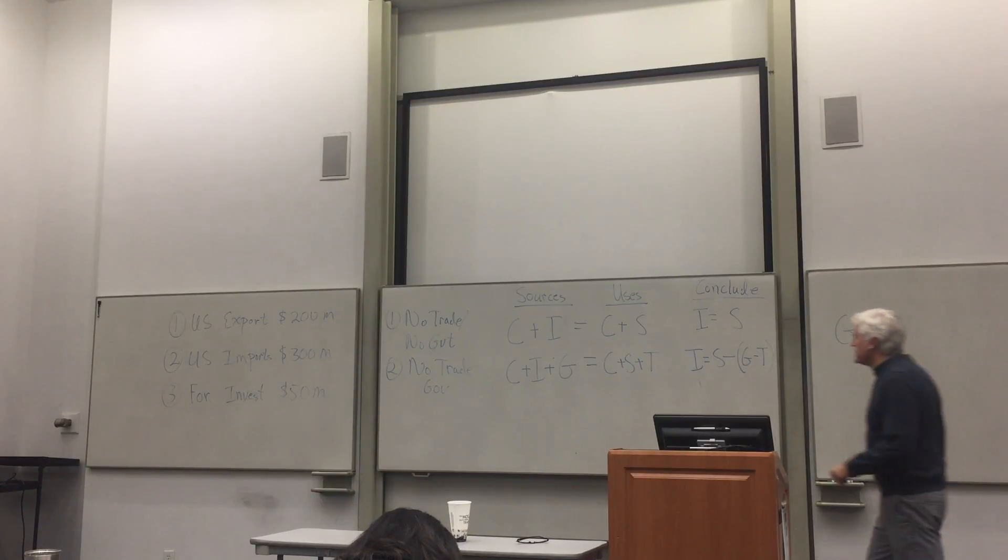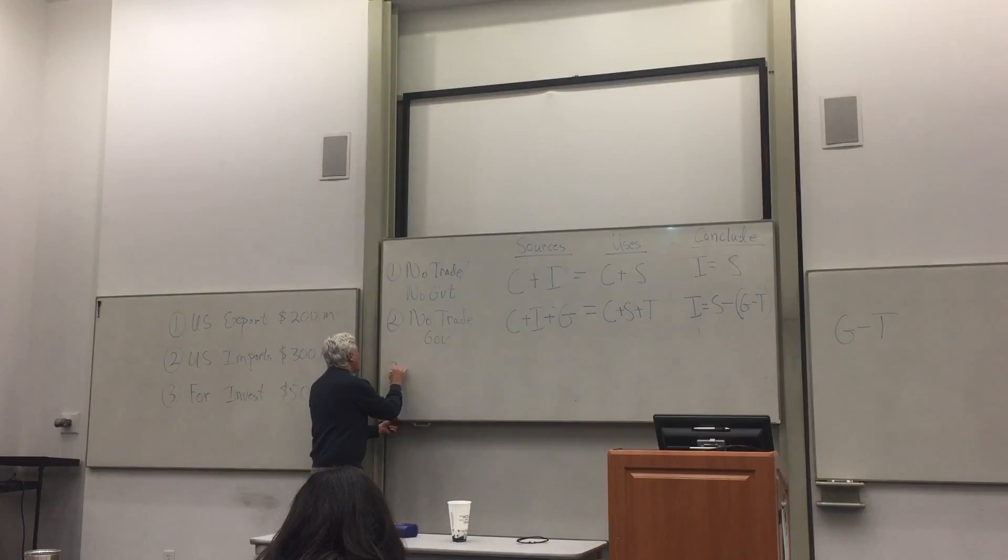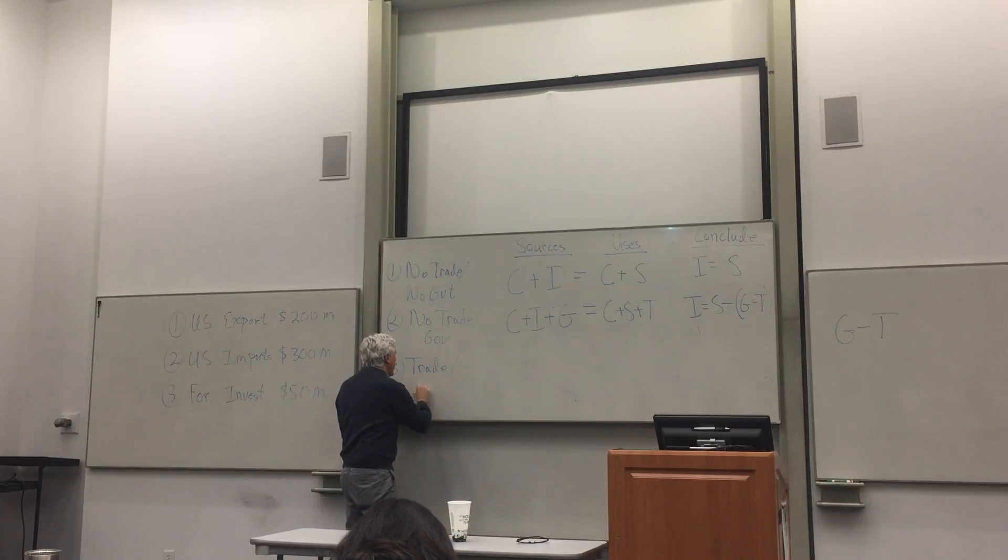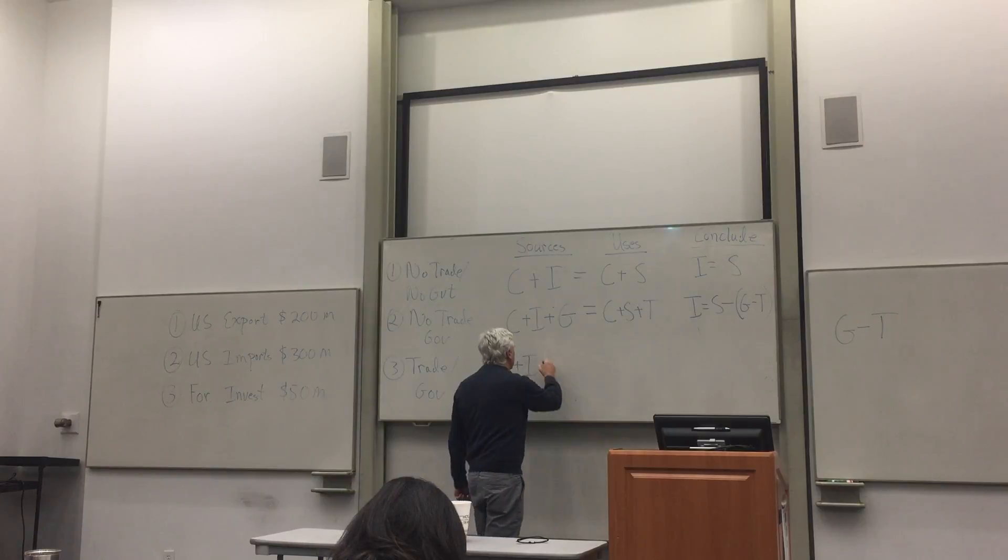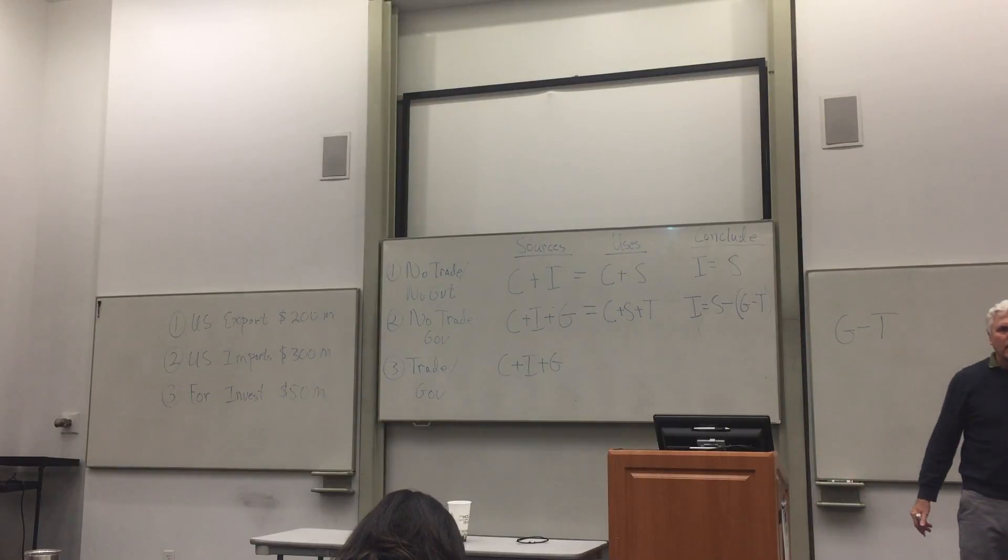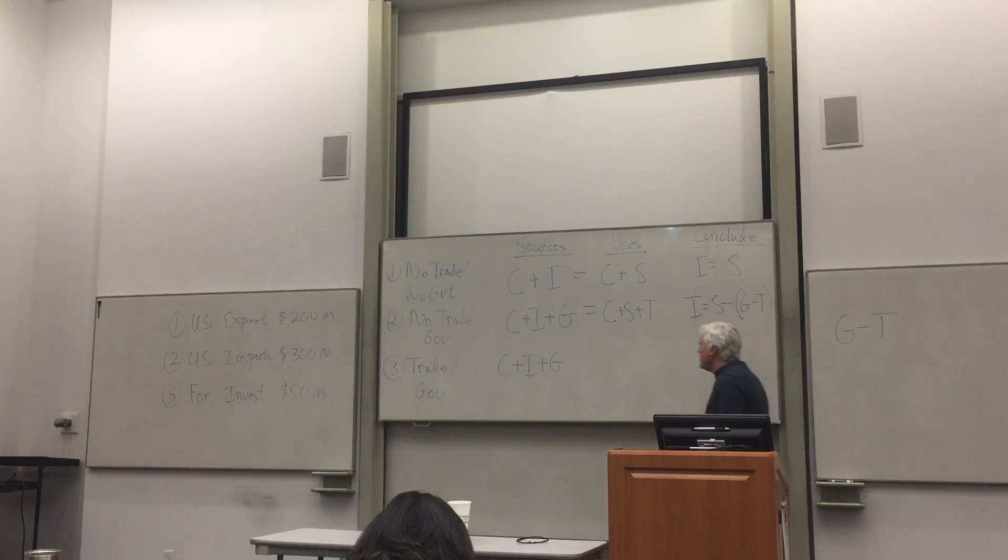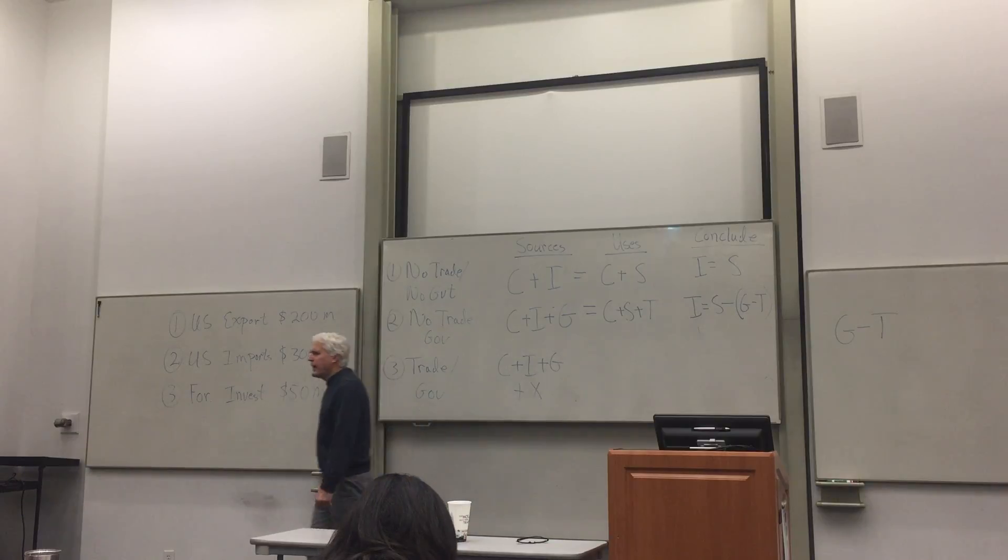Okay, but now, and this is where we're going to hook back around to the discussion of the current account. Three, let's imagine we have a world in which there is trade and a government. Sources of funds: consumer goods, you can sell nachos and beer, investment goods, you can sell new trucks, government expenditures, you can sell nuclear weapons to the government. The third, or the fourth way to make money in this economy though, is by exporting. So, X means exports.